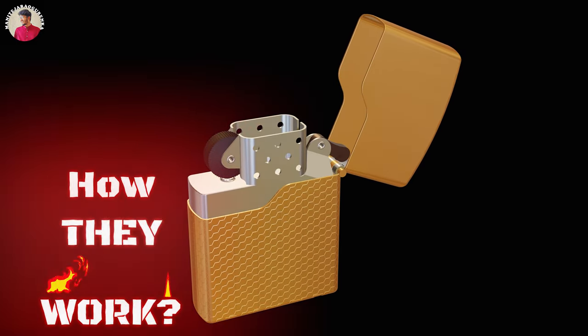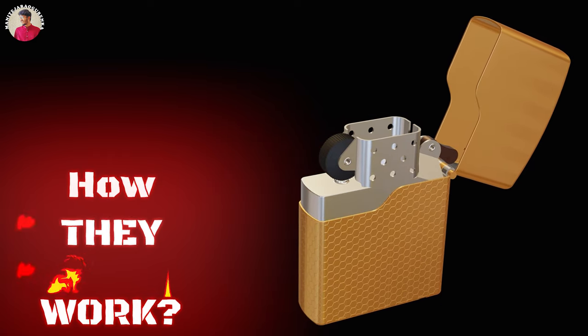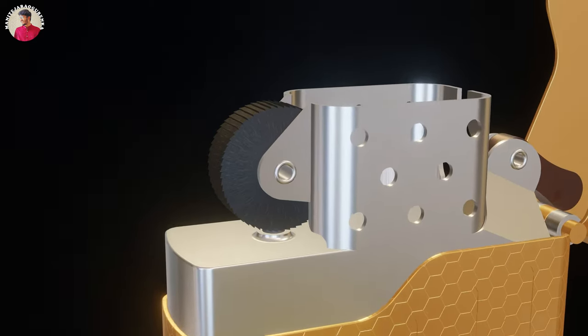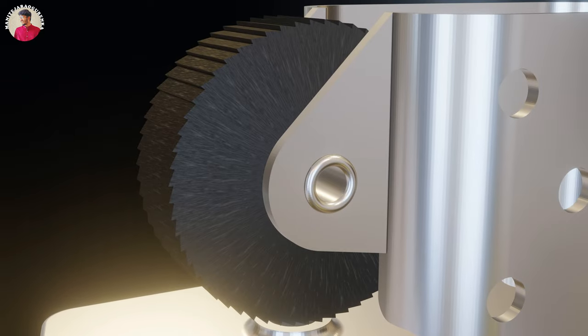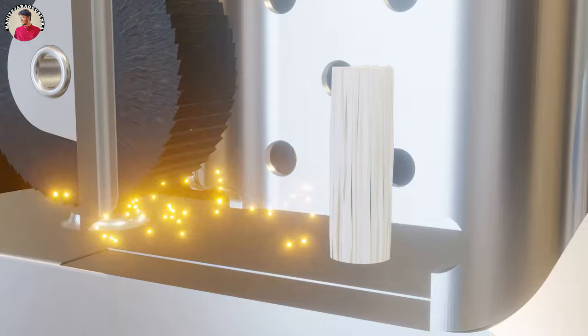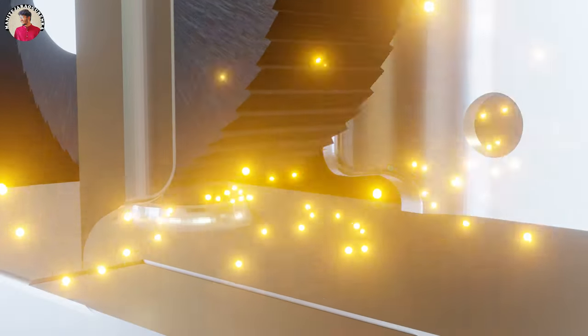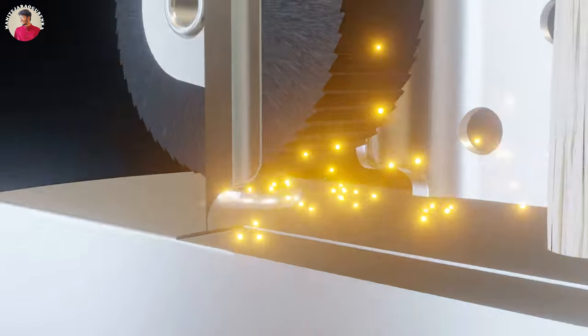Now let's see how these lighters work, and the science behind them. The Zippo lighter uses a simple mechanical flint wheel that is turned with a thumb finger. This wheel will strike a spark against the wick by getting scraped against the flint bar, which is supported by the spring below.